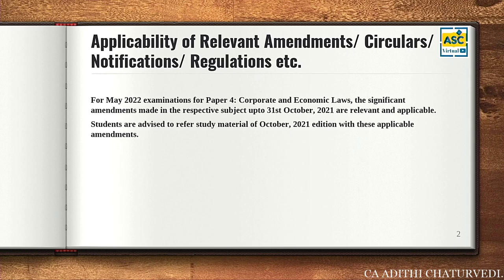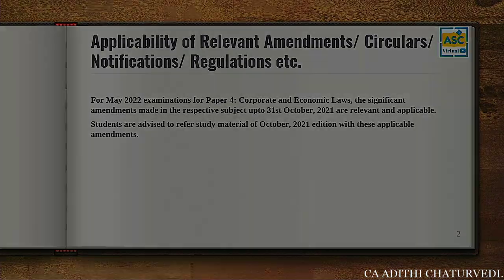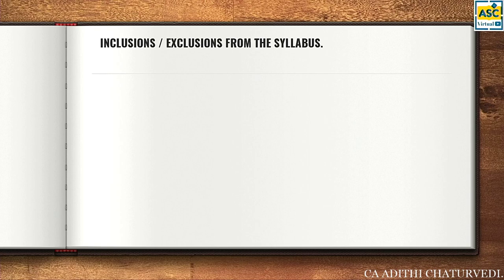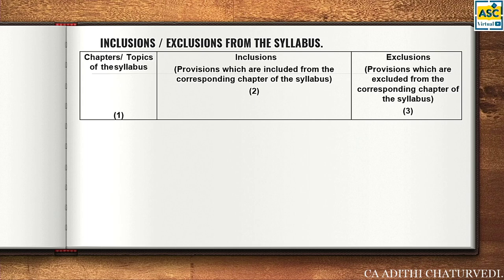Whatever is there in your study material we've covered in class, so that's not much to worry about. The RTP has given a table with chapters, topics, inclusions and exclusions. Anybody who has seen the previous RTP or notifications would know this table is not completely new — we've been seeing it for almost two attempts. This is the third attempt when this table has been printed again, so do not worry.